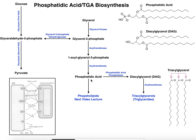After the second acylation we have phosphatidic acid, also called 1,2-diacylglycerol-3-phosphate, with the phosphate on position 3 and two esterified fatty groups. Phosphatidic acid is a branch point in complex lipid metabolism: we can either go to phospholipids, which we'll cover in the next video, or go straight to triglycerides, which is a simpler pathway and what we'll cover now.